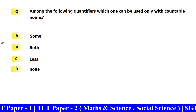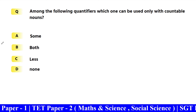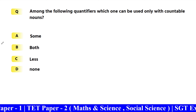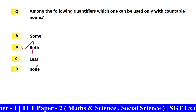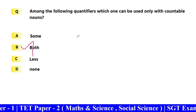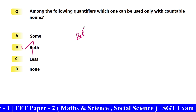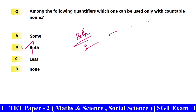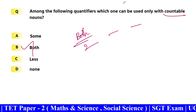Among the following quantifiers, which one can be used only with countable nouns? Use only with countable nouns — 'Both'. Countable nouns use 'both'. This is simple.